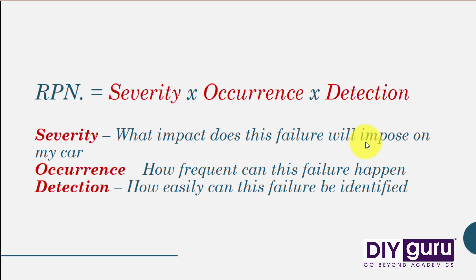Severity stands for the overall impact on your car — like the impact your car will suffer if a component gets failed. Occurrence is the probability of a certain part to get failed, that is how frequently that component is getting failed. And detection is how easily you can identify a failure in a component of a car.